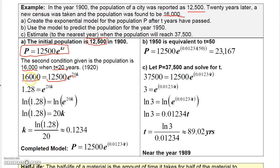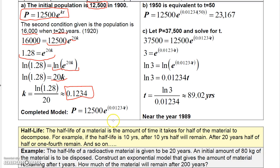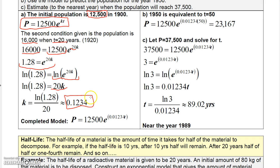Plugging in: 16,000 divided by 12,500 gives 1.28 on the left, and e to the 20k on the right. Take the natural log of both sides — ln(1.28) equals 20k, since ln(e^(20k)) is just 20k. Divide by 20 and rounding to four decimal places gives k ≈ 0.0124. Substituting back, the model is P equals 12,500 e to the 0.01234t.